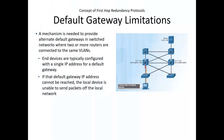The default gateway limitation is that in case a particular default gateway — i.e., the exit or entry point of the network — fails, then none of the devices within the network will be able to connect outside that particular network. So it becomes essential to have a redundant router or default gateway. If the default gateway cannot be reached, the end device will not be able to send packets outside that network.